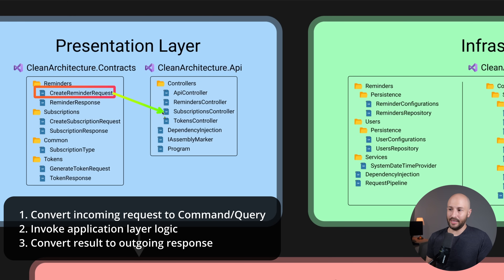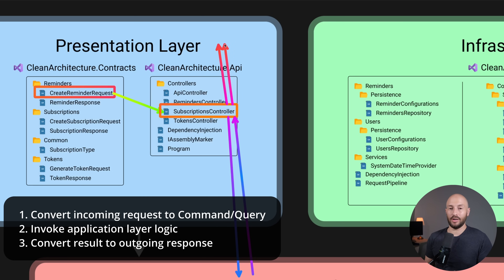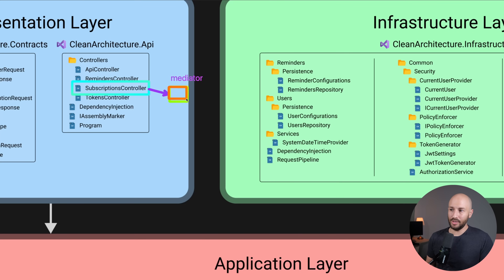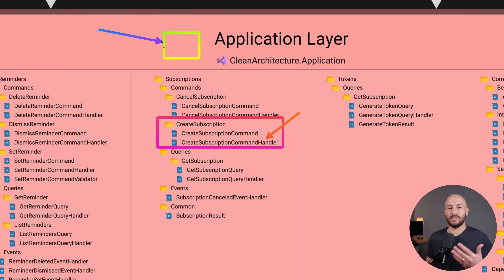Internally, the mediator contains a mapping between each command or query and the corresponding handler that gets invoked. So when we create the create subscription command and send it to the mediator, the mediator is responsible for invoking the create subscription command handler in the application layer. The mediator is simply a component that receives one of these commands or queries and invokes the corresponding logic in the application layer.